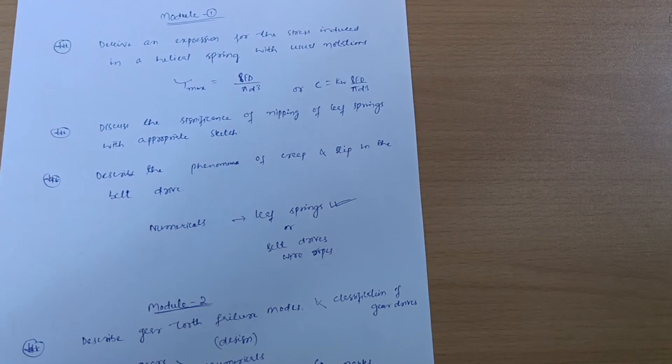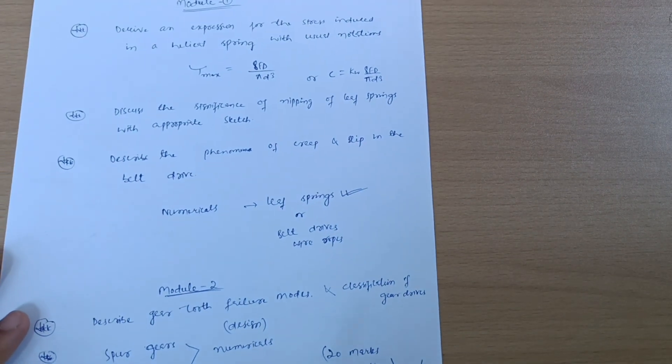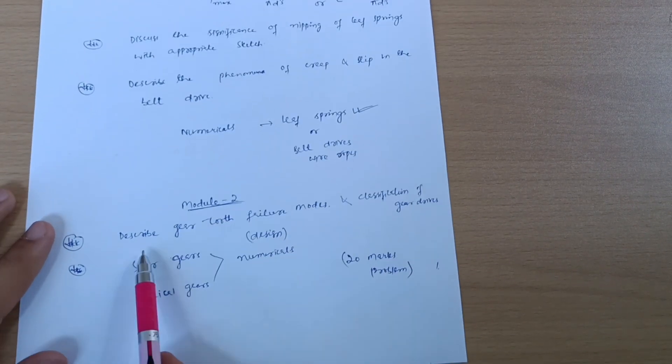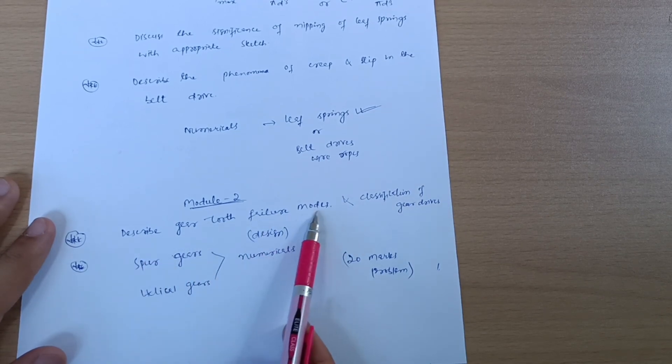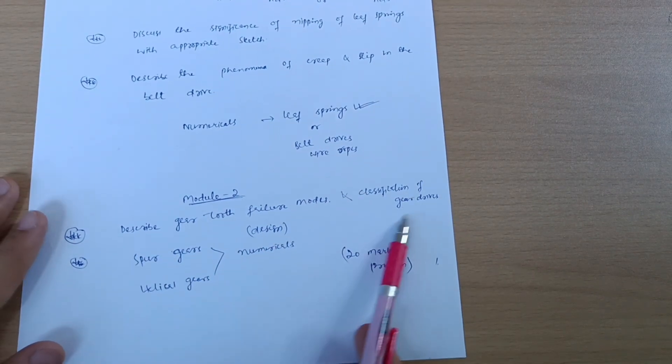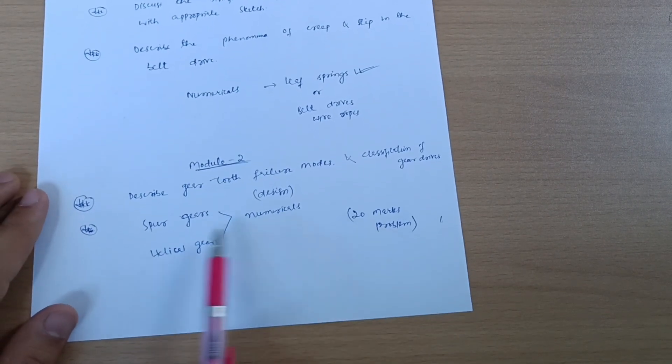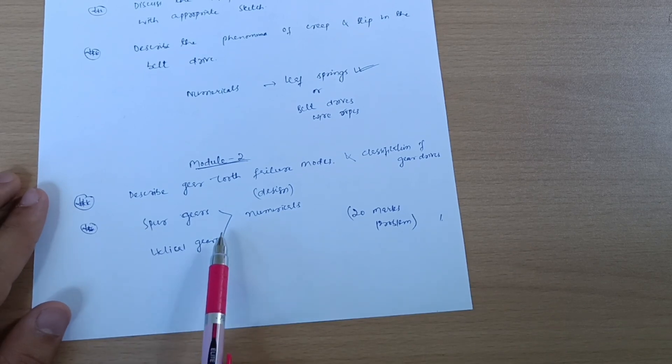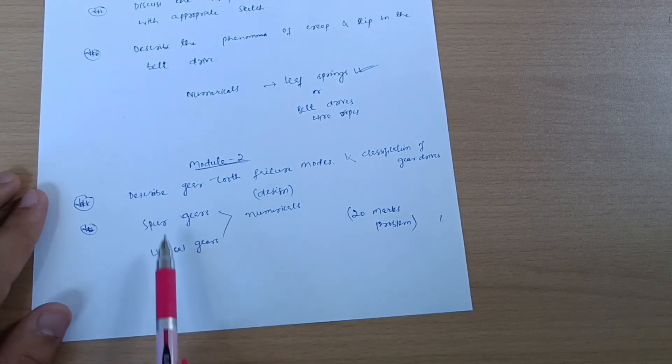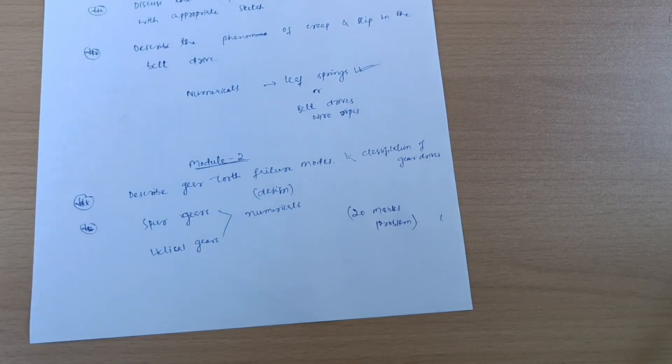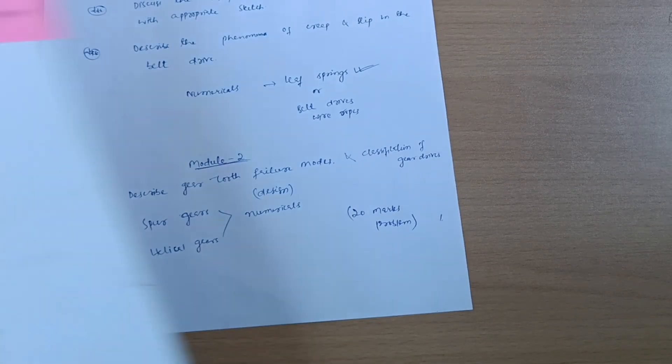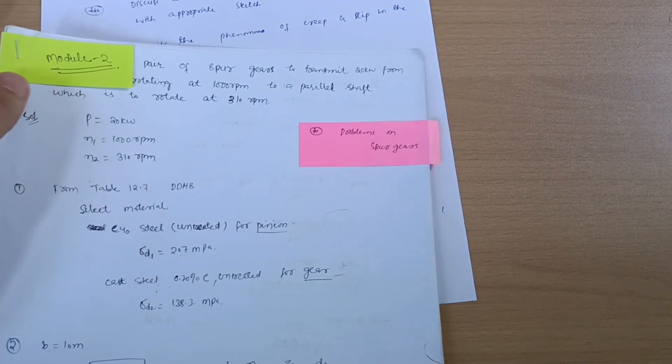Next is Model 2. Describe gear tooth failure modes and classification of gear drives, 20-20 marks. Spur gears and helical problems are there which you should definitely go through. These are also simpler problems.